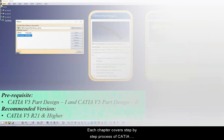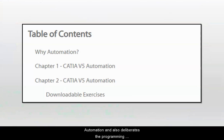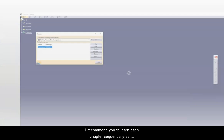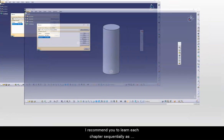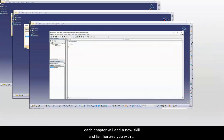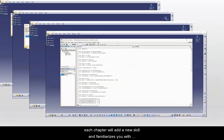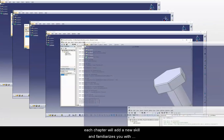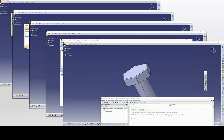Each chapter covers a step-by-step process of CATIA automation and also deliberates the programming methodology throughout the course. I recommend you to learn each chapter sequentially, as each chapter will add a new skill and familiarize you with CATIA V5 Automation.